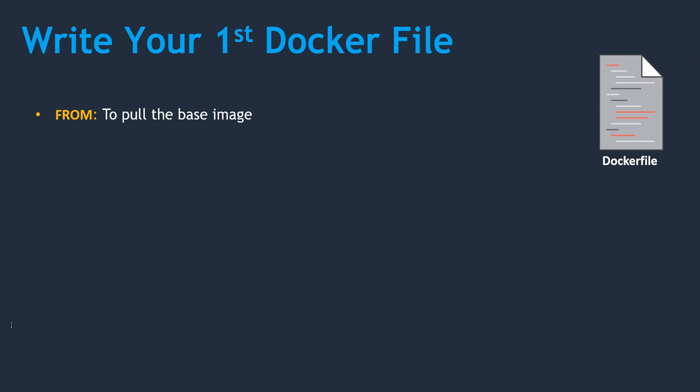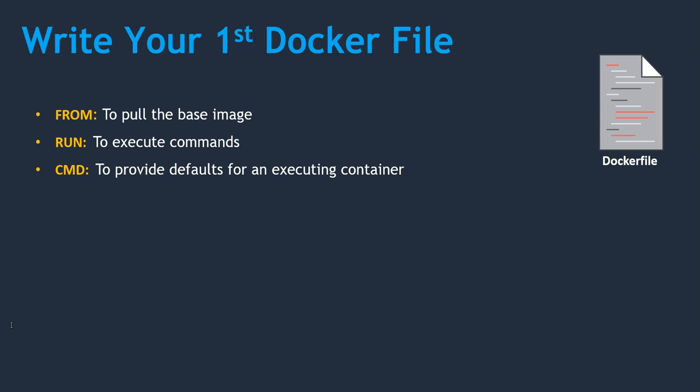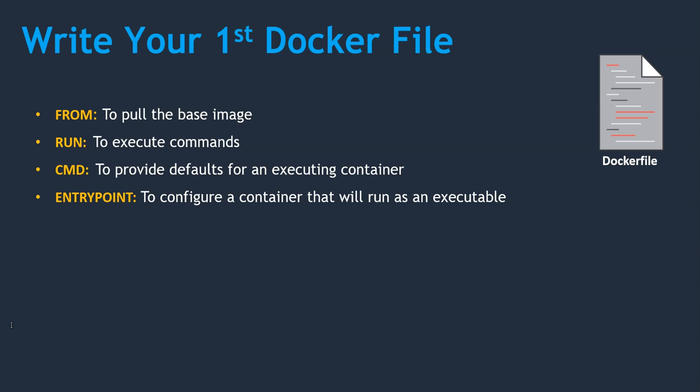First, FROM: it helps to pull the base image, because most Dockerfiles are built on top of a base image. Next, RUN: to execute commands — if we want to execute any Linux commands, we use the RUN instruction. Next, CMD: to provide defaults for an executing container. If we want to run some commands during execution time, we use CMD, but the command mentioned in CMD can be replaced. Next, ENTRYPOINT: this is also similar to CMD, but the CMD command can be replaced whereas the ENTRYPOINT command cannot. If you want to know more details about CMD and ENTRYPOINT, please comment below so I can create a dedicated video with detailed explanation and examples.